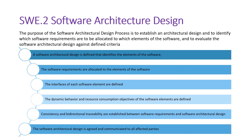After software requirement analysis, we move to software architecture design. Another term for this is high-level design. The purpose of the software architecture design process is to establish an architecture design, identify which software requirements are allocated to which elements of the software, and evaluate the software architecture design against defined criteria. Just as requirements are documented in the SRS, here we have a Software Architecture Design Document.